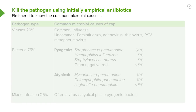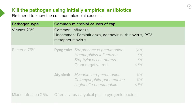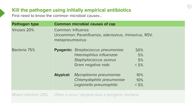For the industrialized world, these are relatively similar across different countries. They split down into about 20-25% of cases that are just due to viruses — influenza being the commonest one, but occasionally other viruses: rhinovirus, RSV, parainfluenza, and adenovirus. Three-quarters of cases are due to bacteria.